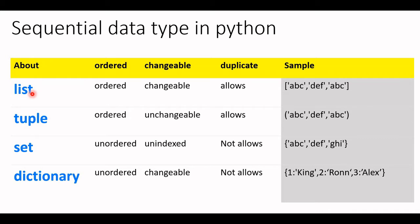One advantage in Python is that in a list I can store multiple types — I can store string, I can store integer, I can store a float all in one list. In part one we will understand mostly about the list because it has a lot more methods and is frequently used in basic Python, and in part two we will learn about tuple, set, and dictionary.